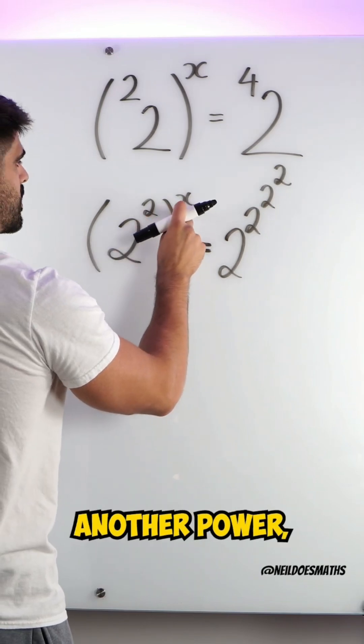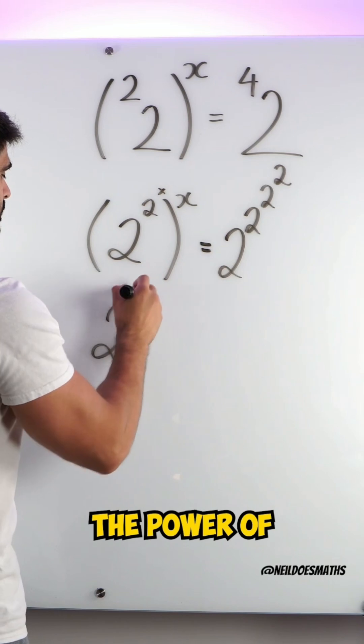When you have a number to a power raised to another power, we multiply these powers. So this is 2 to the power of 2x.